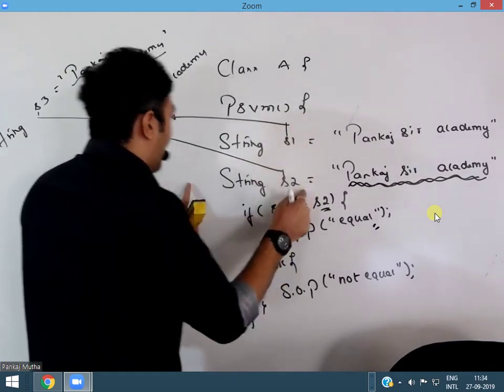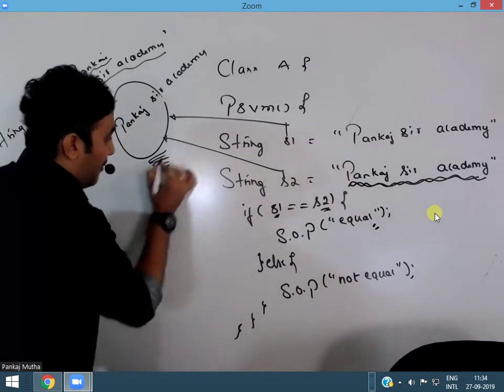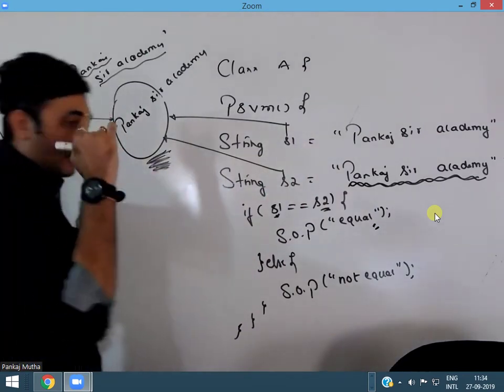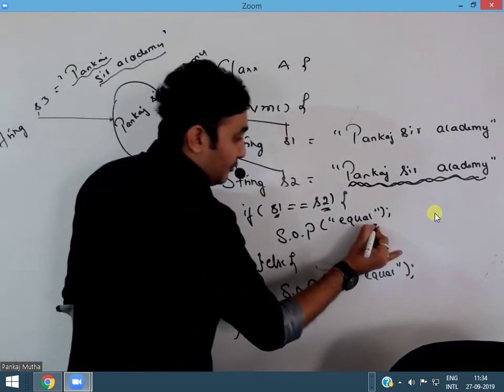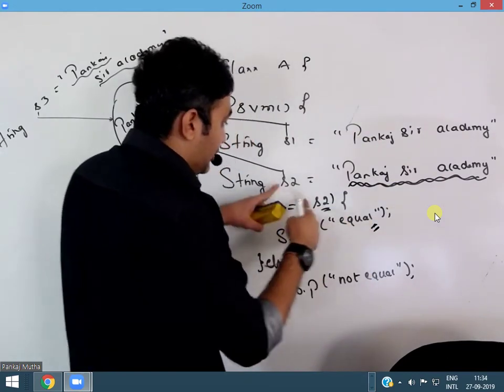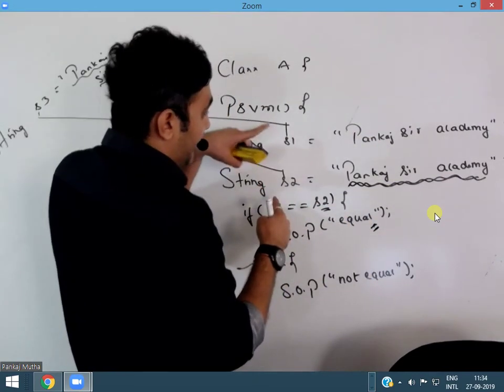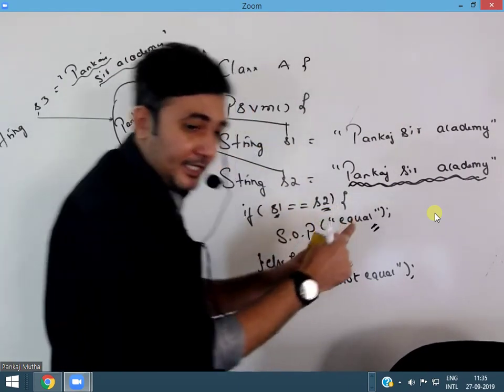Because S1 and S2 are pointing to the same object, the output of this, as the addresses are same of the object, it would be equal. It is not comparing the value and printing equal, it is comparing the address of the object S1 with S2 and the output is what? Equal.